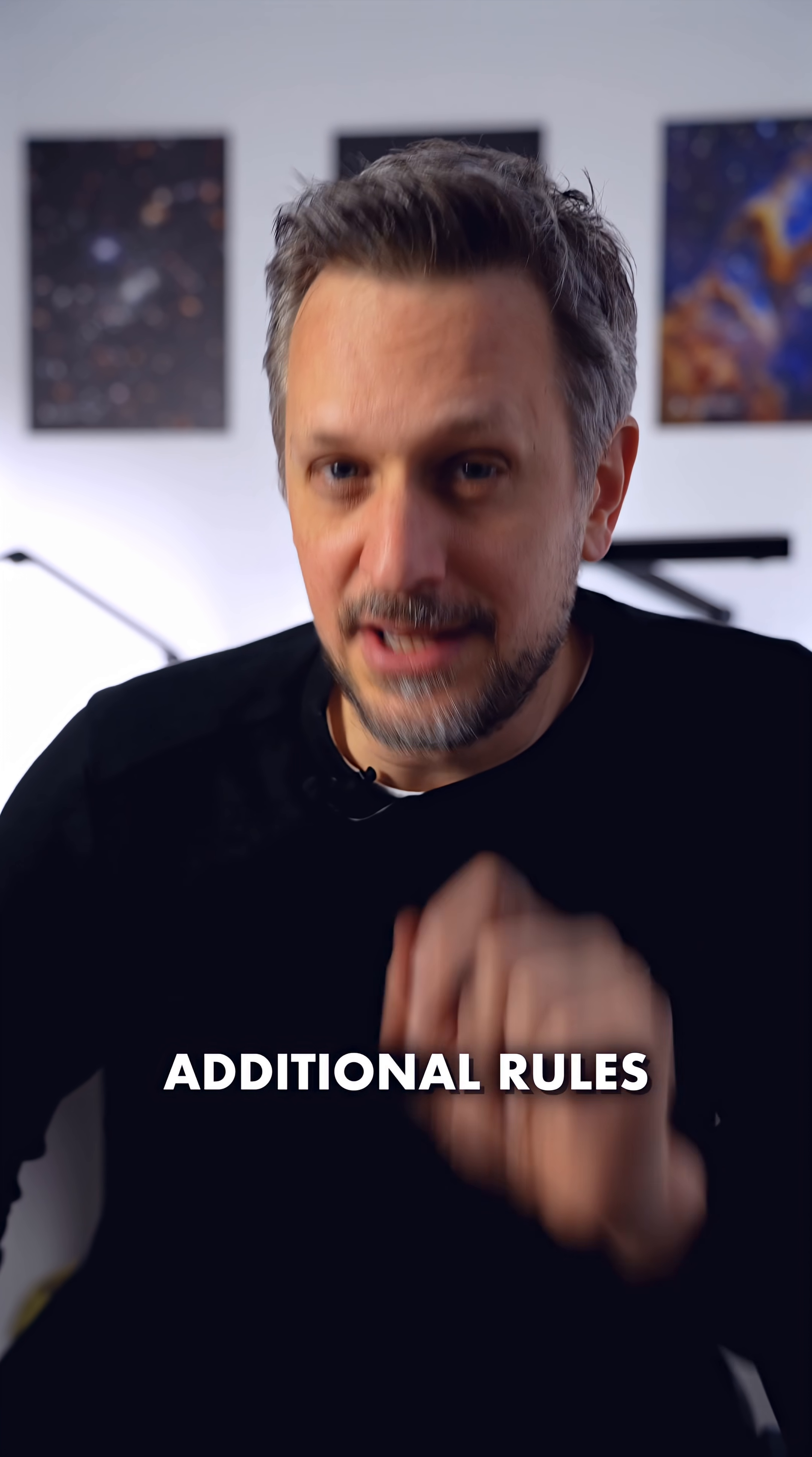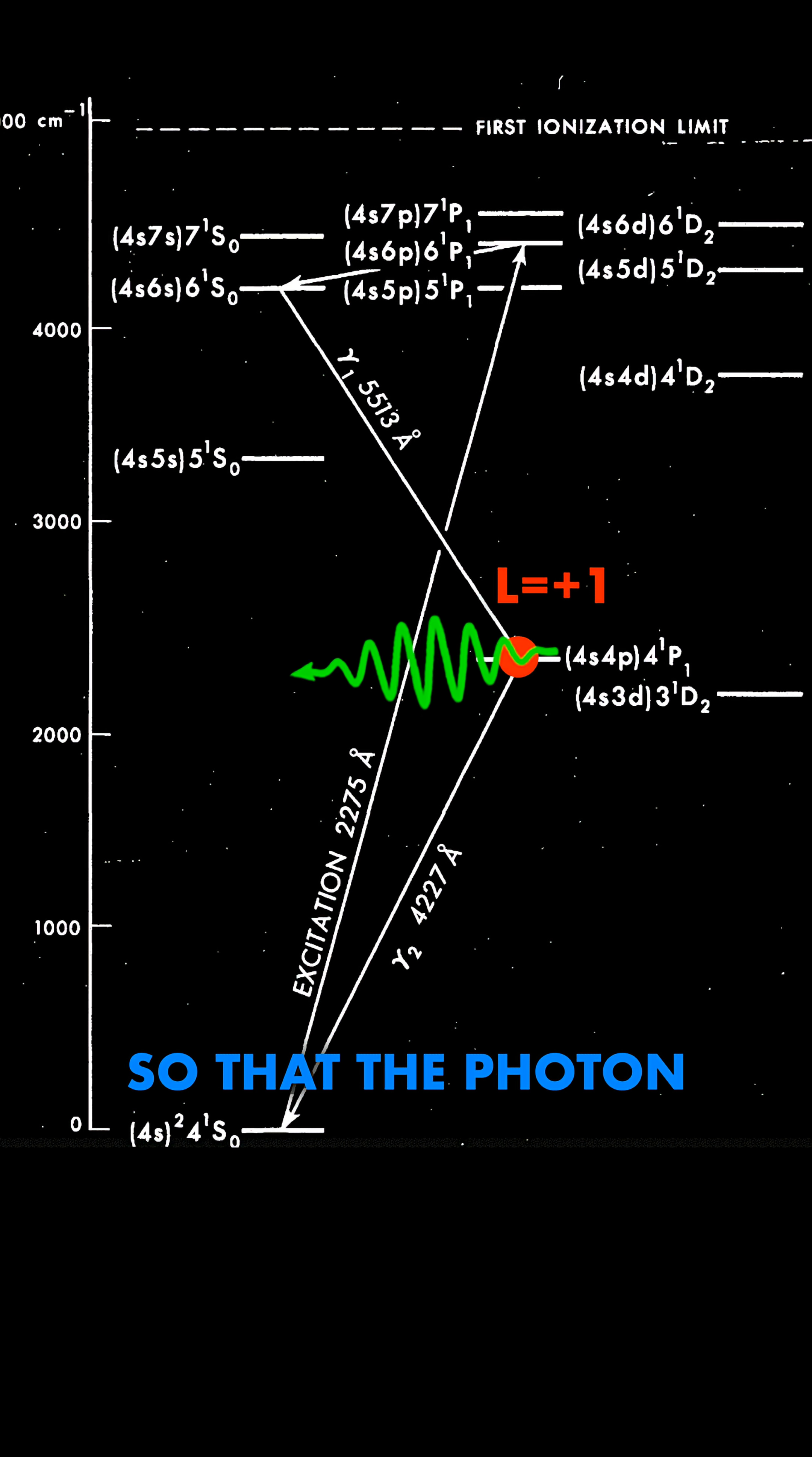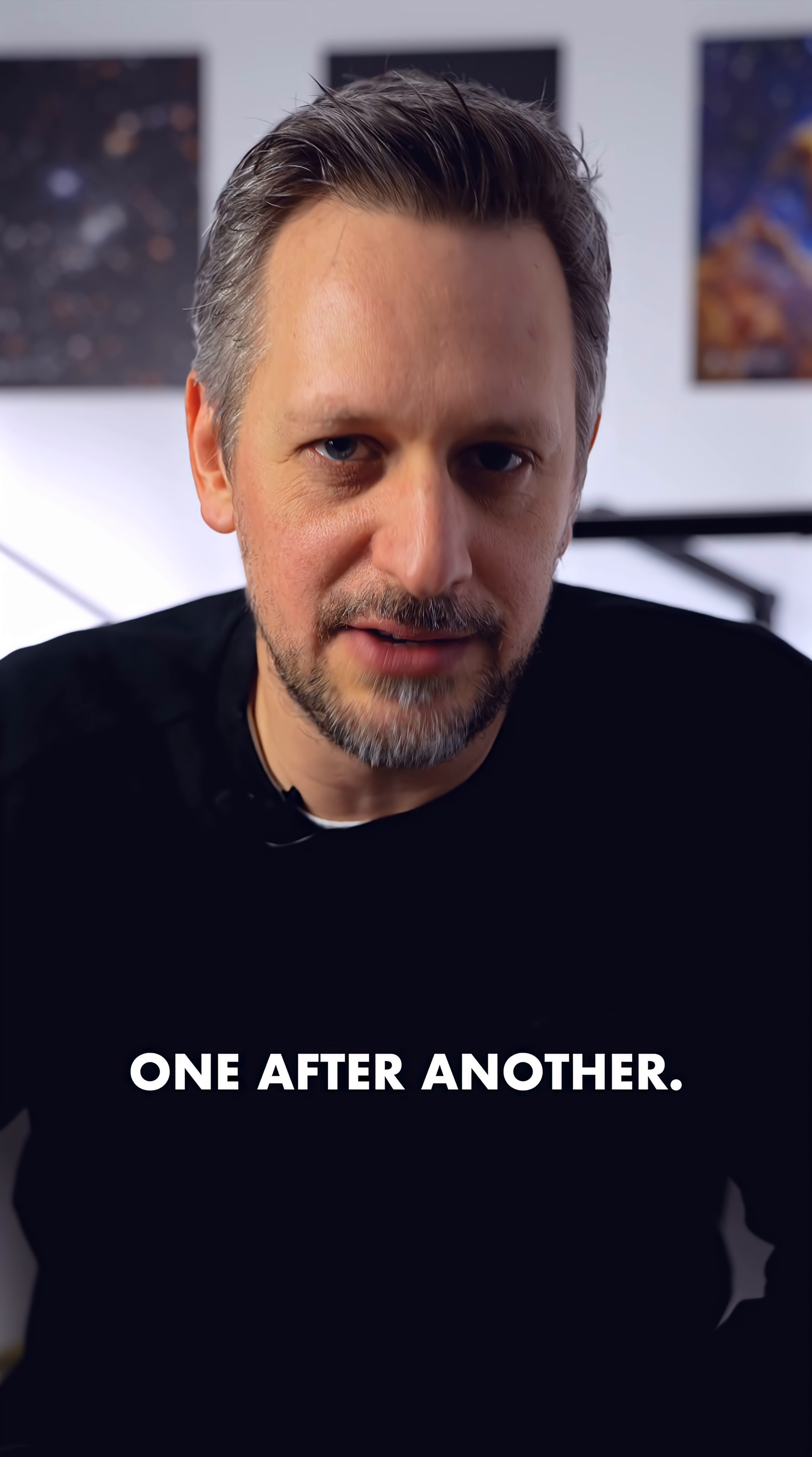And there are some additional rules for these transitions. The most important one is that transitions must be between states with different angular momentum of plus minus one, so that the photon with spin plus minus one can be emitted. An atomic cascade is just a series of such transitions, which happen very briefly one after another.